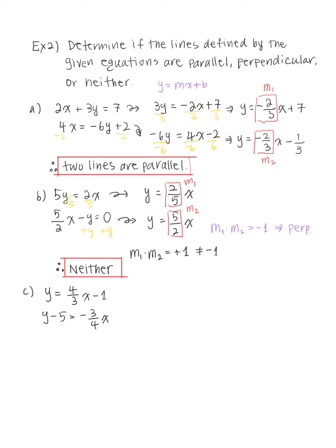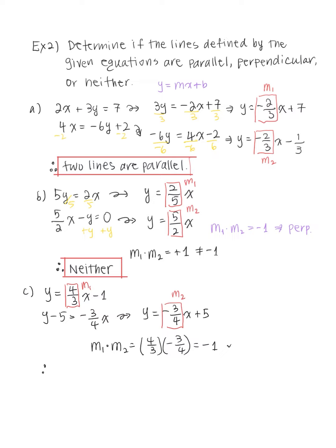For the third pair: the first equation gives m1 equals 4/3. For the second, adding 5 to both sides gives m2 equals negative 3/4. These are negative reciprocals of each other. We can verify: m1 times m2 equals 4/3 times negative 3/4 equals negative 1. Therefore, the two lines are perpendicular.